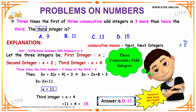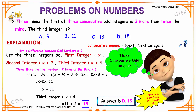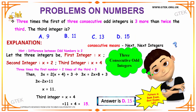We have to find what will be the third integer. Substitute your x value in your third integer. That is, 11 plus 4, which gives you your answer to be 15. That is, your option is D. D is your answer. This is an important question as it has appeared in bank exams and government exams.